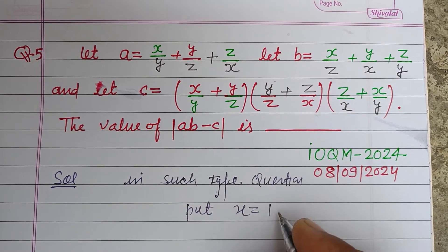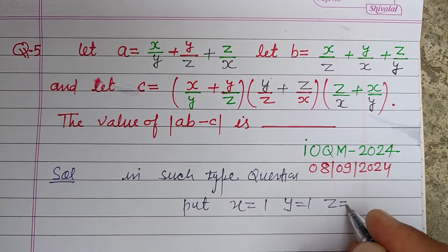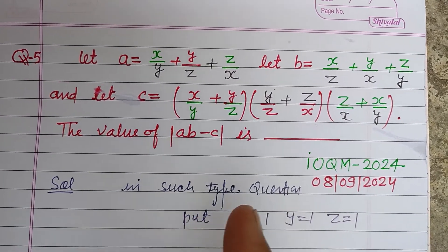put x equal to 1, y equal to 1, or z equal to 1. You can put the same value of all three variables x, y, z.